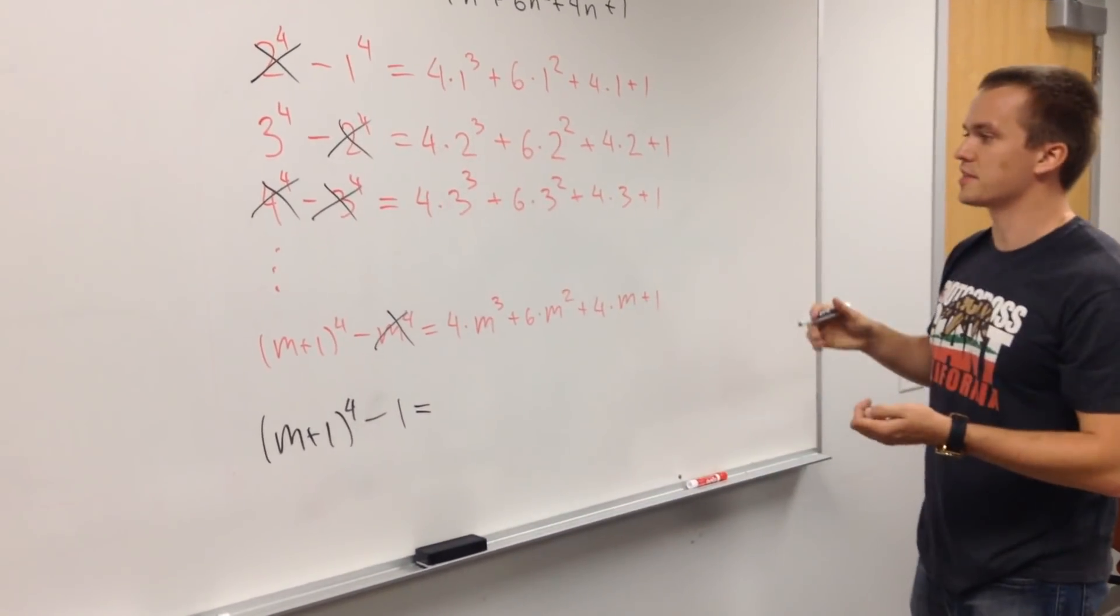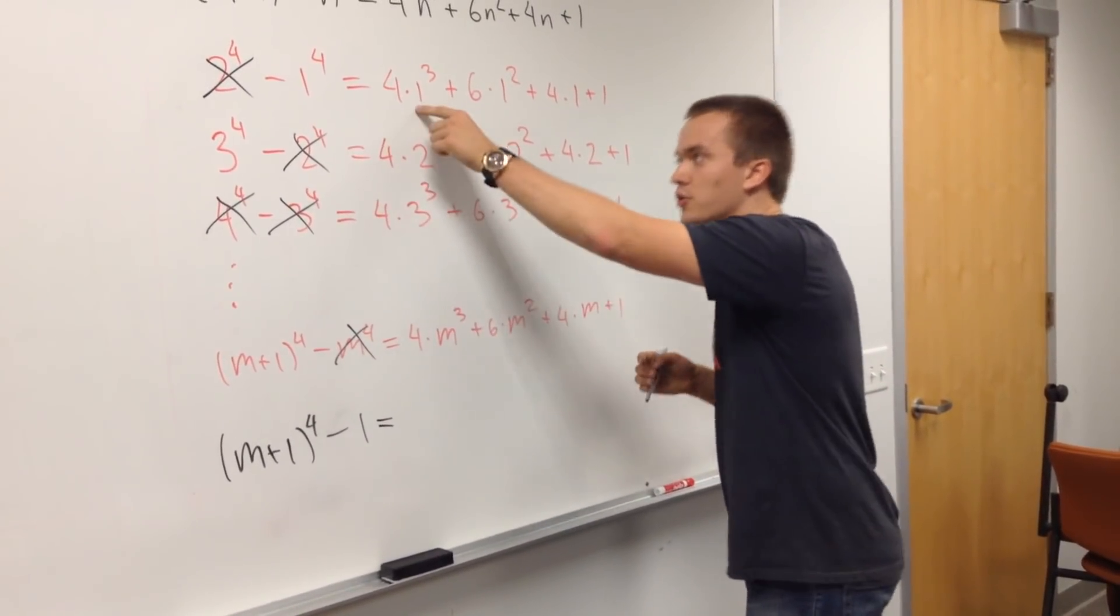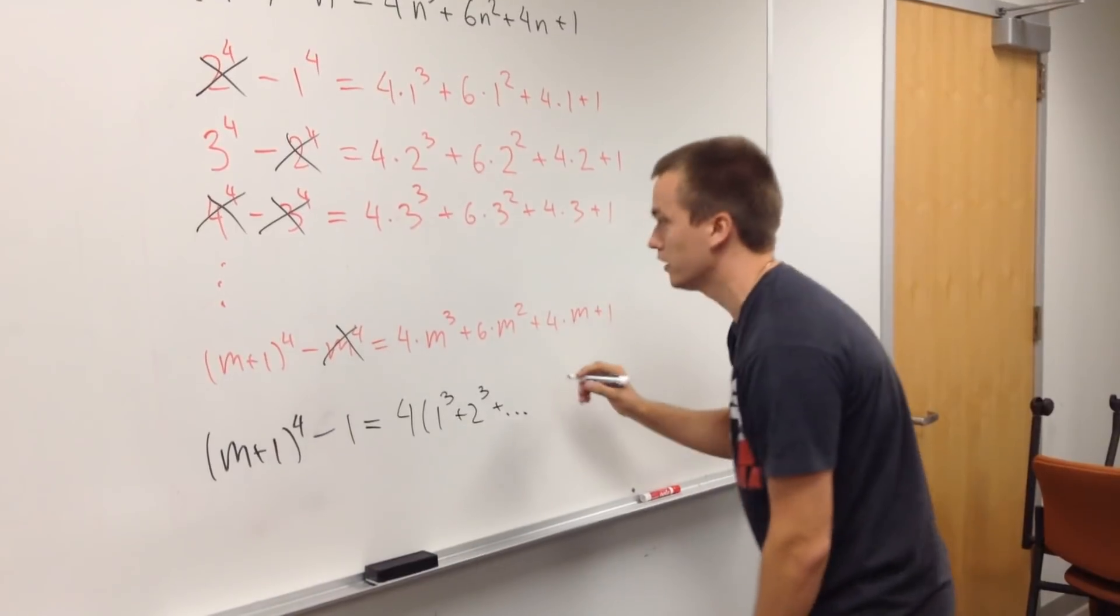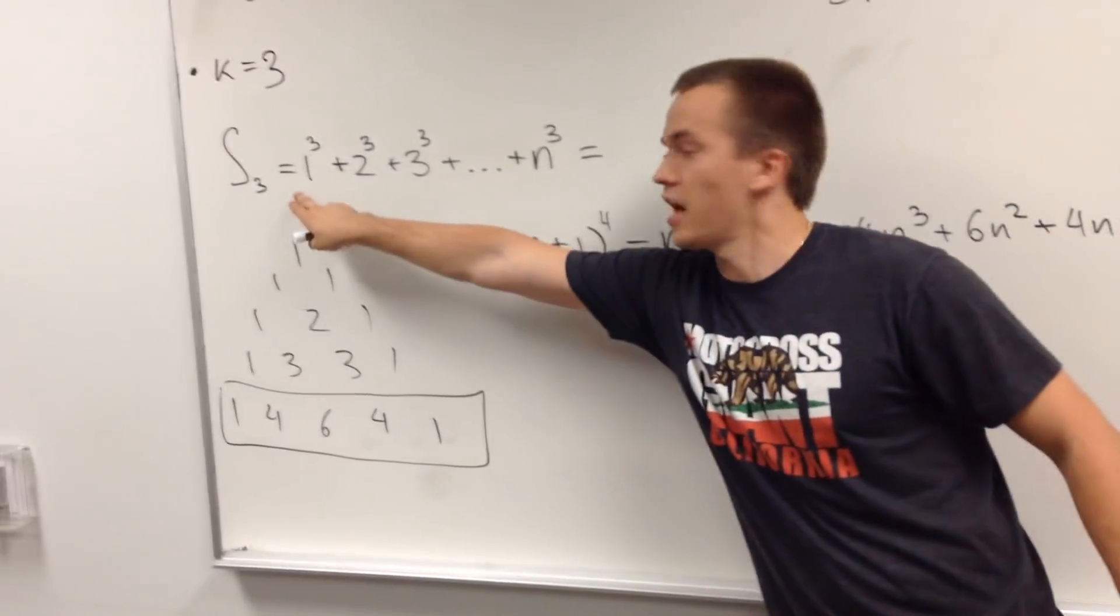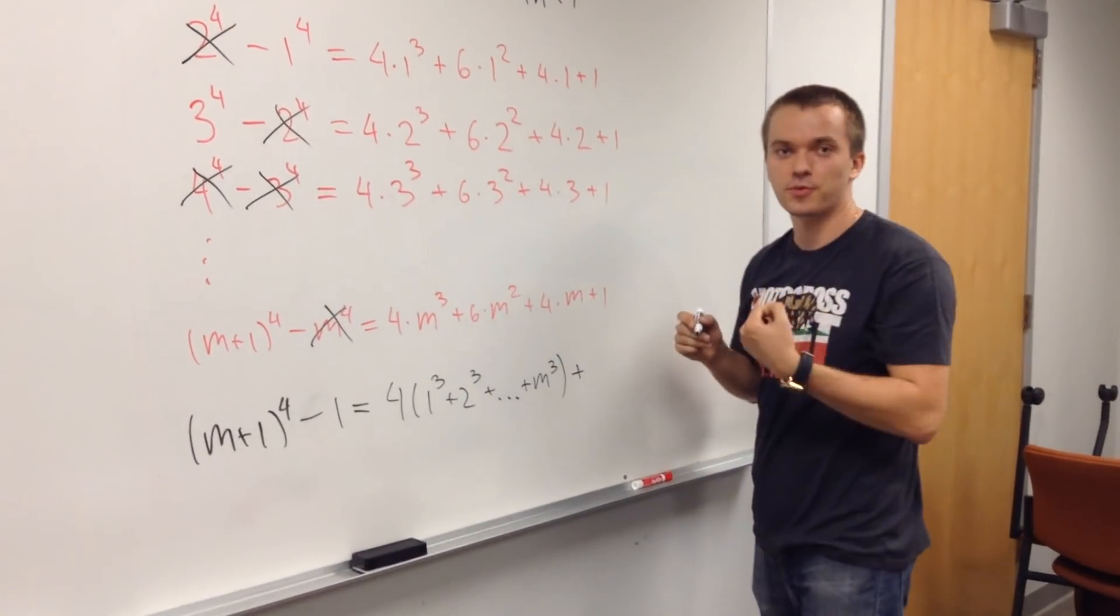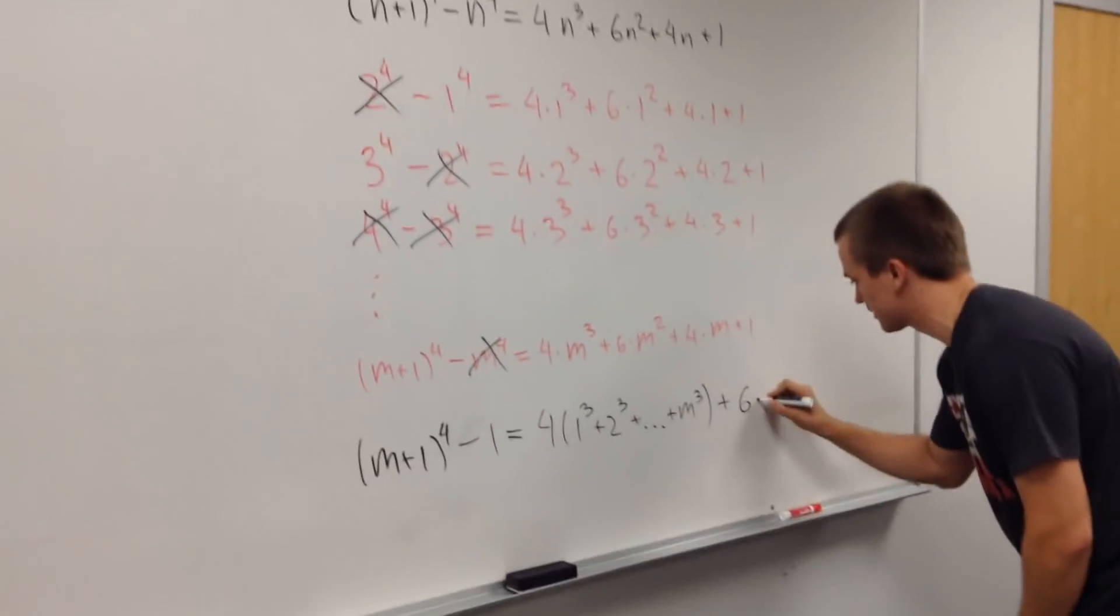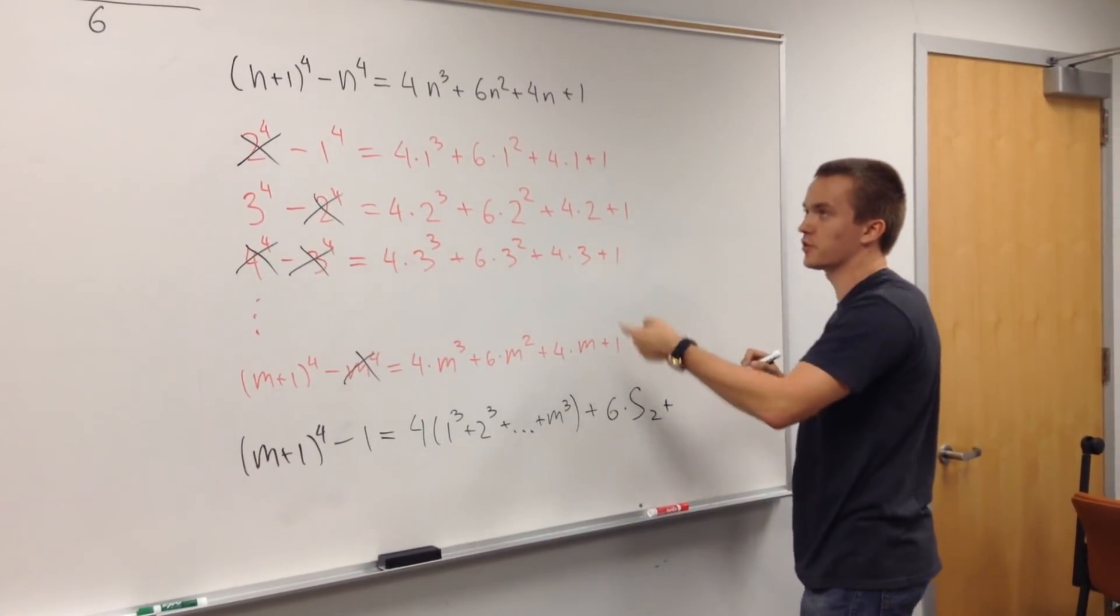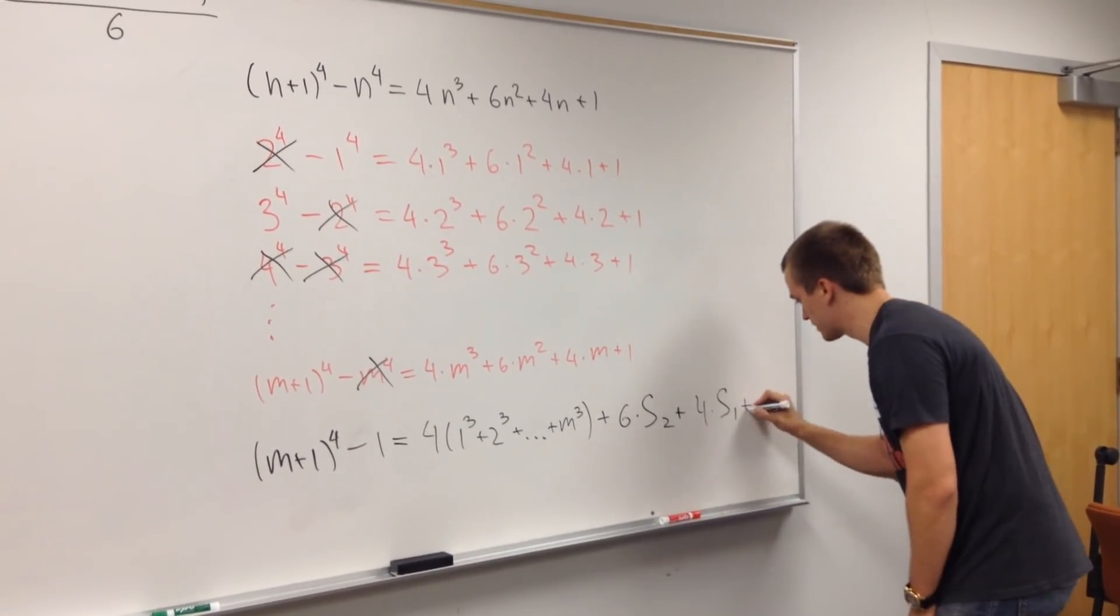What I will have on the left side. On the left side, 4 is a common factor for each of this term. And each of this term, 1 cube. So let's factor this. I have 4, 1 cube plus 2 cube plus m cube. And this is our unknown sum s3. But what about next terms? Here I have the sum of squares, and the sum of squares is s2. So it's going to be equal plus 6s2. What about this sum? This sum is the sum of 1, 2, 3, etc. And this is s1. So plus 4 times s1. And the last one plus s0.